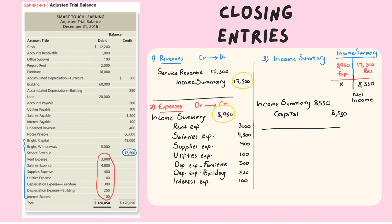The fourth closing entry is to close withdrawals. Withdrawals is debit nature. To close withdrawals, I need to credit this account. The entry will be capital on the debit side to withdrawals on the credit side, and the amount is the withdrawals amount, which is $5,000.